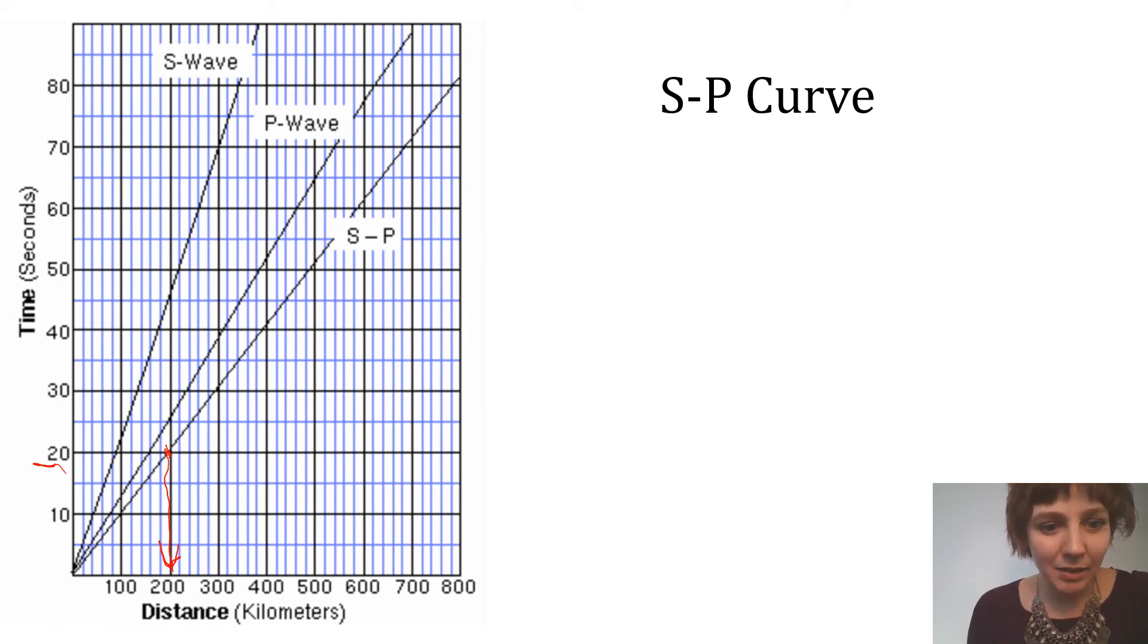We can go ahead and count it out. So the old method, the S minus P time would have been here. And if we count that, that looks like 5, 10, 15, 20 seconds travel time difference.